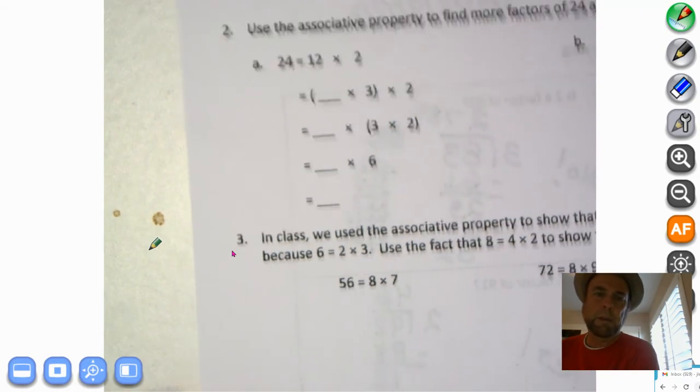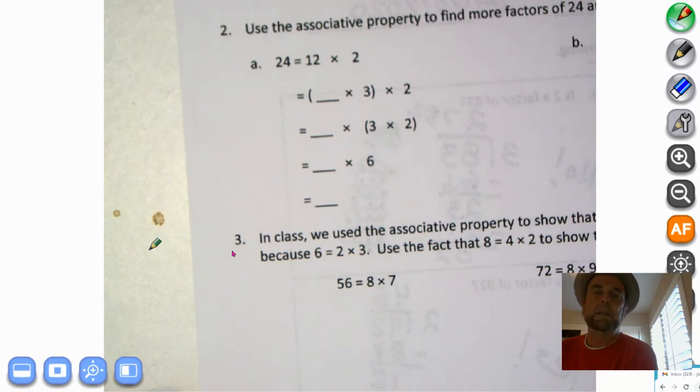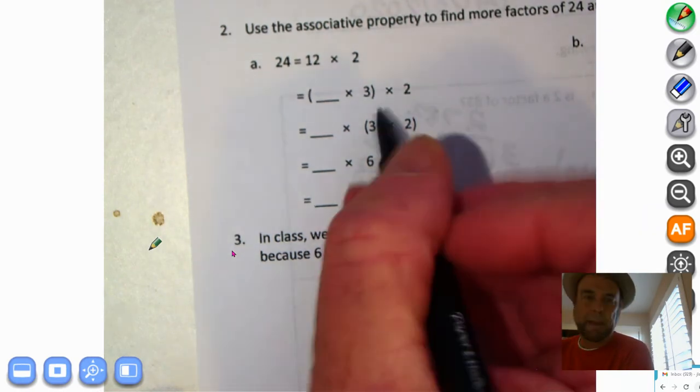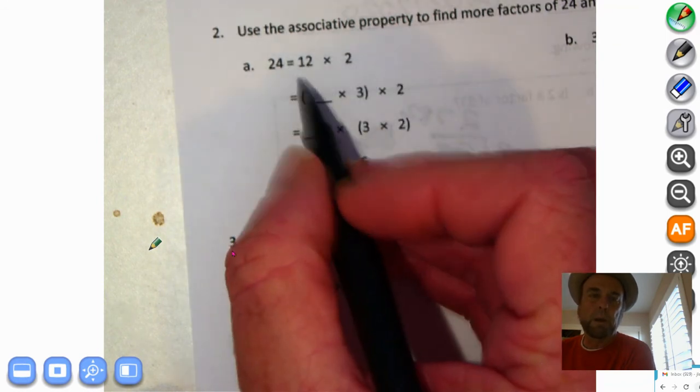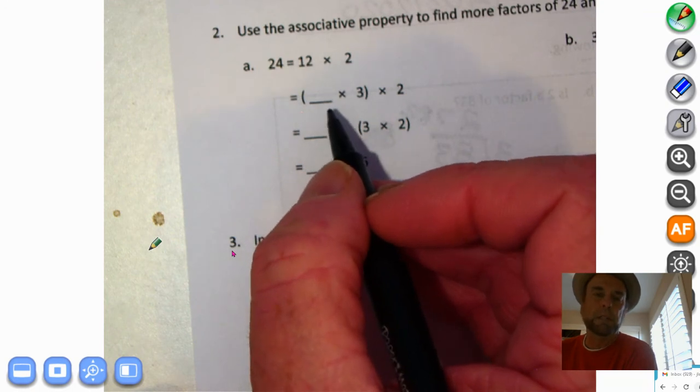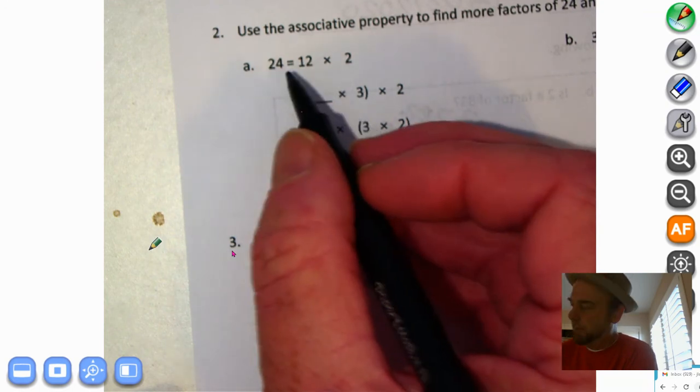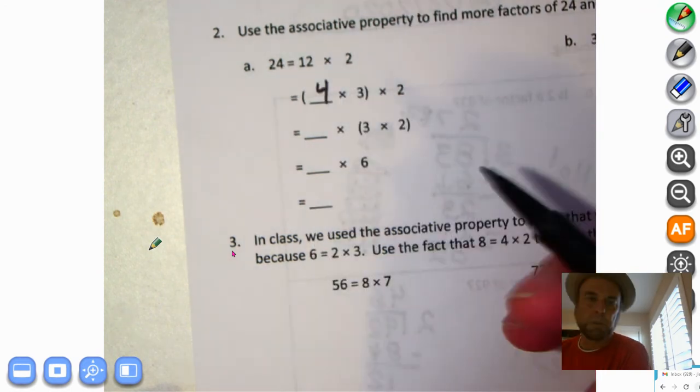It says use the associative property to find more factors of 24 and 36. Kind of what we were doing in the concept development yesterday. So 24 equals 12 times 2. We can show that there's more than just 12 times 2 are its factors. Let's find some more factors. So we can see we have blank times 3 times 2.